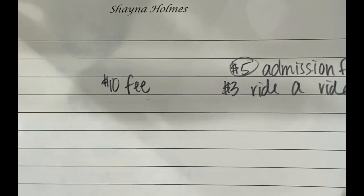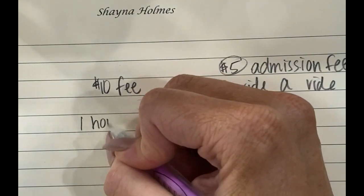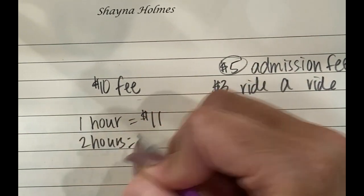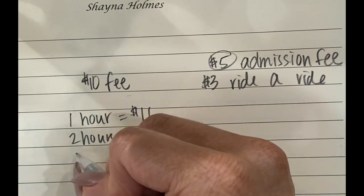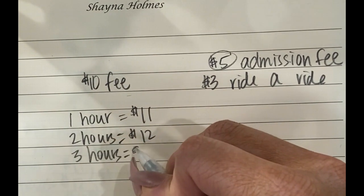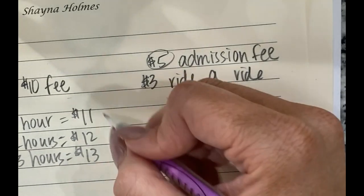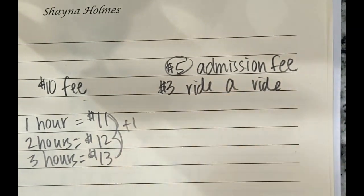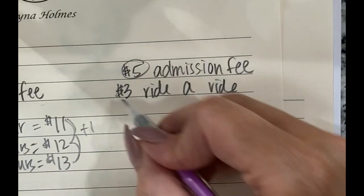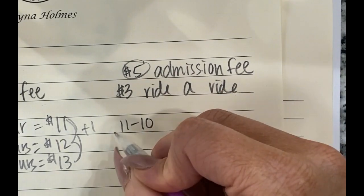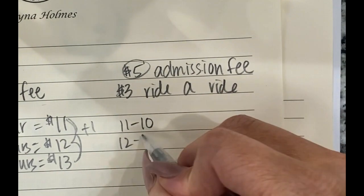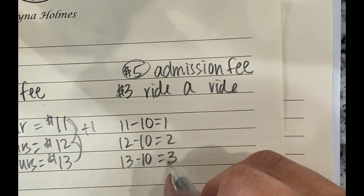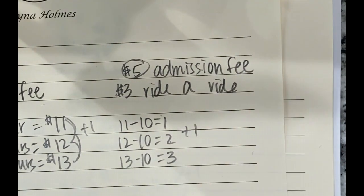But then it also tells me that at one hour, it is $11, at two hours, it equals 12 and at three hours, it is 13. So what I can do to find out like how much it is per hour? Well, what is this moving up by? This is plus one per hour. I can also think about this if I subtracted 10 away from each of these, that would leave me with one, two, and three. So that's also going up by one.